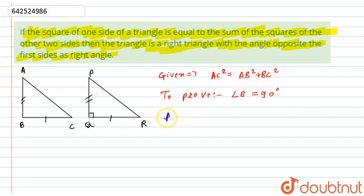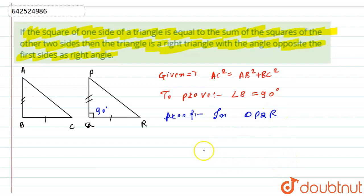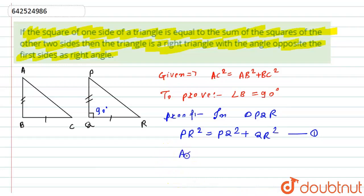Let us start with the proof. Before starting the proof, we have to construct another right angle triangle PQR with angle Q as 90 degrees. In triangle PQR, by using the Pythagorean theorem, we can say that PR squared is equal to PQ squared plus QR squared. Let this be equation number one.